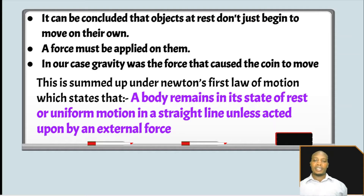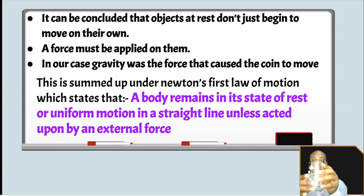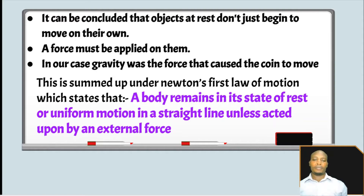It can be learned that if a body is at rest, it will continue remaining at rest. If it's in motion, it will continue being in motion. Supposing our glass was bottomless, the coin could continue falling, and it would continue falling until there was a barrier or something that could make it stop. From those observations, we can now state Newton's first law of motion.